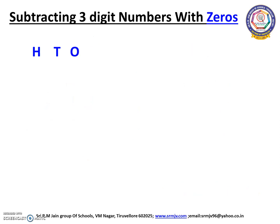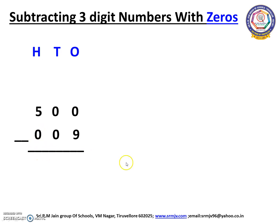Let us see one more example. First we have to check the symbol. Here we have a subtraction symbol, so we are going to subtract 9 from 500. If we do not have any number in a place, we can write 0. Here we do not have any number, so we are going to write 0 there. We have to start our sum from the 1's place. Here we have 0 and 9.